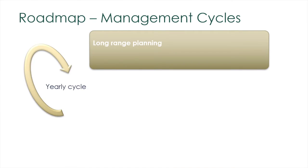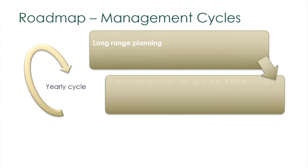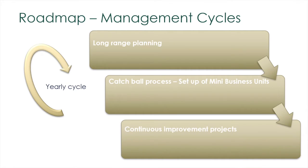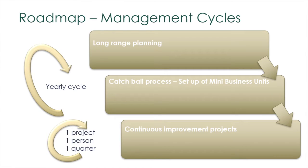Long-range planning is an annual cycle, which moves into the catch-ball process — also an annual cycle — and finally into continuous improvement projects, which runs over a three-month cycle.